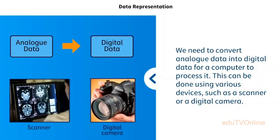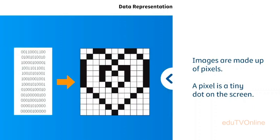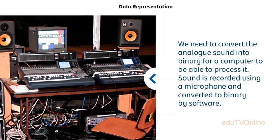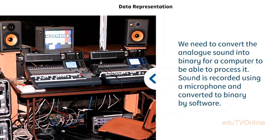This conversion can be done using various devices such as a scanner or a digital camera. Images are made up of pixels — a pixel is a tiny dot on the screen. If an image was simply black and white, each pixel would either be black or white: a one would represent a black pixel and a zero would represent a white pixel. Using this, we can look at how an image is created.